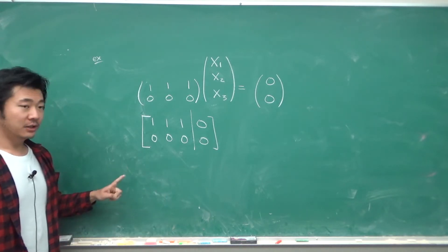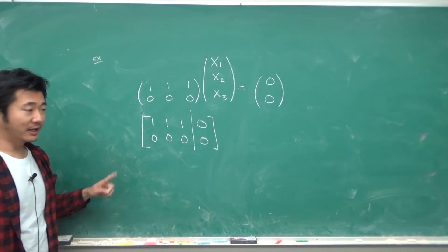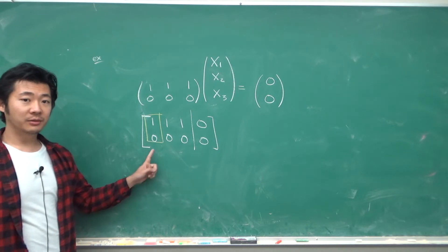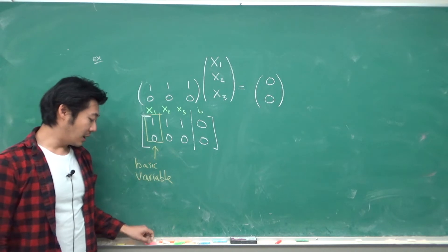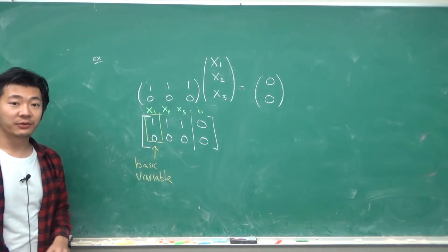In fact, this is already in reduced row echelon form, so we can identify this is our pivot column, which means that it corresponds to the basic variable, and the remaining two columns correspond to the free variables.